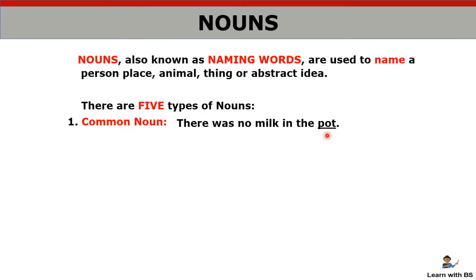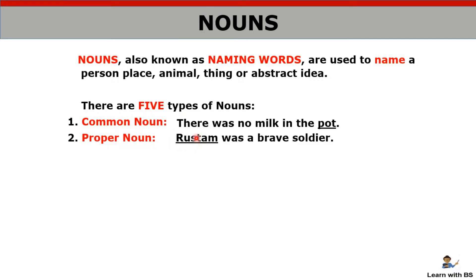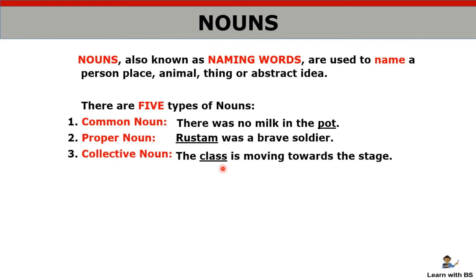Common noun is the general name for any category of thing — like any kind of pot regardless of shape, any kind of bird. The general category name is called a common noun. Then we have proper noun — a particular person's name like Rahul, Sita, Gita — a particular name given to someone — so it is a proper noun. Then we have collective noun — a group name. Like 'the class is moving', 'herd of animals', 'gang of thieves' — that group name is called a collective noun.